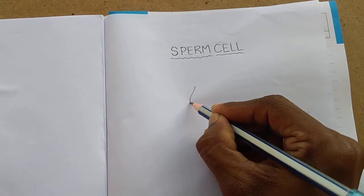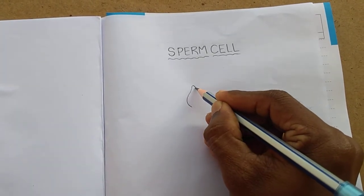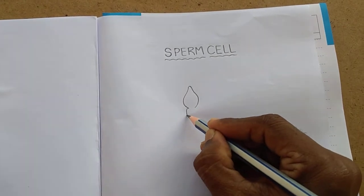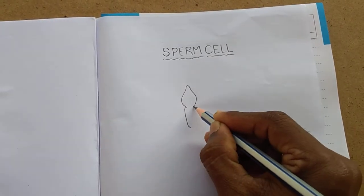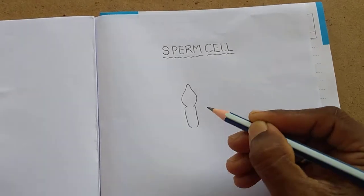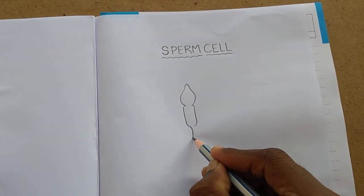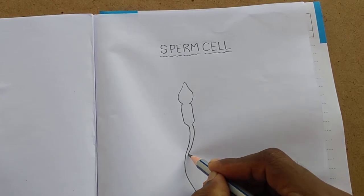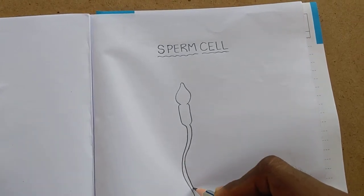draw a water drop like structure like this and from here like this, and from here the tail part. It's very easy.